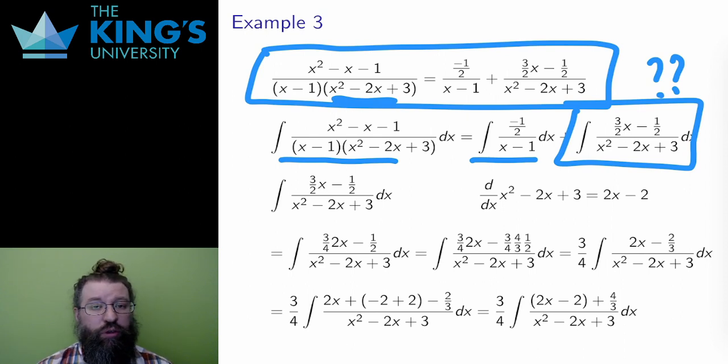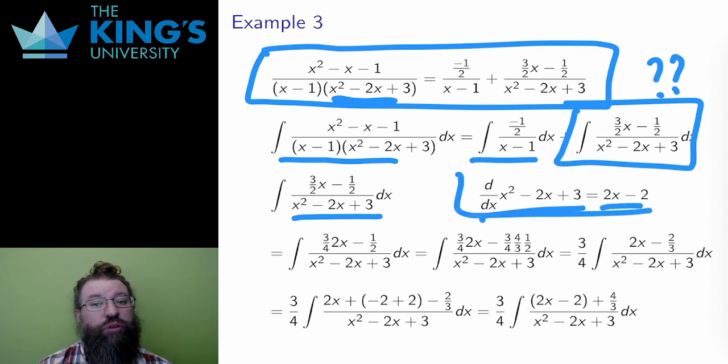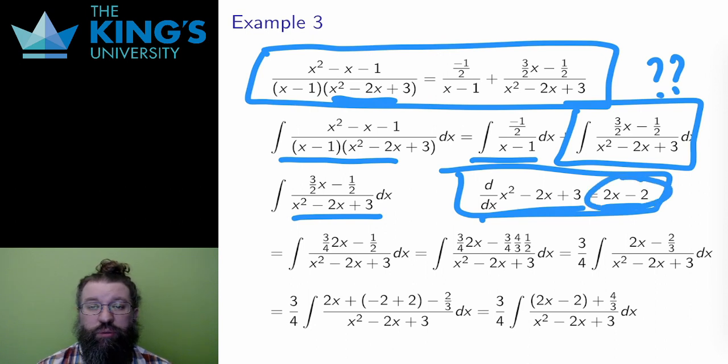The first type of integral with a quadratic denominator was a type that had the derivative of the denominator precisely in the numerator. The derivative of this denominator is 2x minus 2. Therefore, the first thing I have to do is somehow get 2x minus 2 in the numerator of this function.